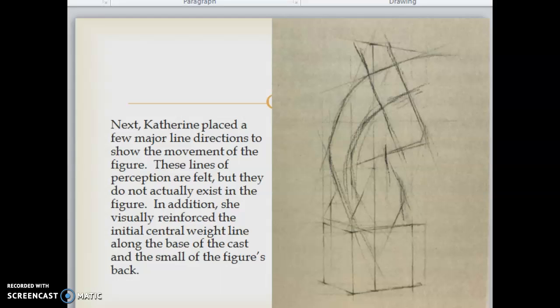Next, she placed a few major line directions to show the movement of the figure. The lines of perception are felt, but they do not actually exist in the figure. In addition, she visually reinforced the initial central weight line along the base of the cast and the small of the figure's back. So she created that central weight line. That's where the center of weight of the sculpture would be. And then she added in these action lines to kind of direct the movement of the figure.